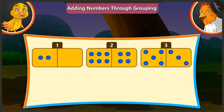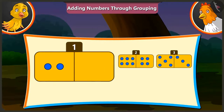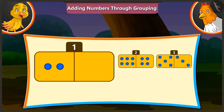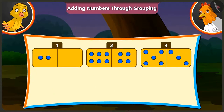Now tell me the number of holes on the first card. The first card has 2 and 0 holes. If we add 0 to any number, we get the same number. Hence, on adding 0 holes and 2 holes, we get 2 holes. Well done, Pilu.